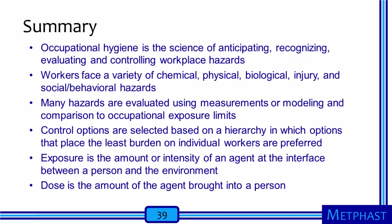To summarize, occupational hygiene is the science, and to some extent the art, of anticipating, recognizing, evaluating, and controlling workplace hazards — the occupational hygiene framework. Workers face a variety of chemical, physical, biological, injury, and social behavioral hazards at work, and workers are the experts on their own work environment. Many hazards can be evaluated using measurements or modeling and by comparison to occupational exposure limits. Options for controlling exposures are selected based on a hierarchy in which options that place the least burden on individual workers are preferred. Exposure is the amount or intensity of an agent at the interface between a person and environment over time, while dose is the amount of the agent brought into a person over a time interval.